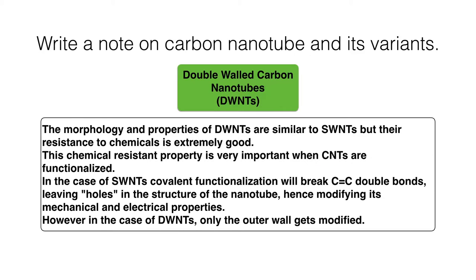In the case of single-wall carbon nanotubes, covalent functionalization will break carbon-carbon double bonds, leaving holes in the structure of the nanotube, hence modifying its mechanical and electrical properties. However, in the case of double-wall nanotubes, only the outer wall gets modified.